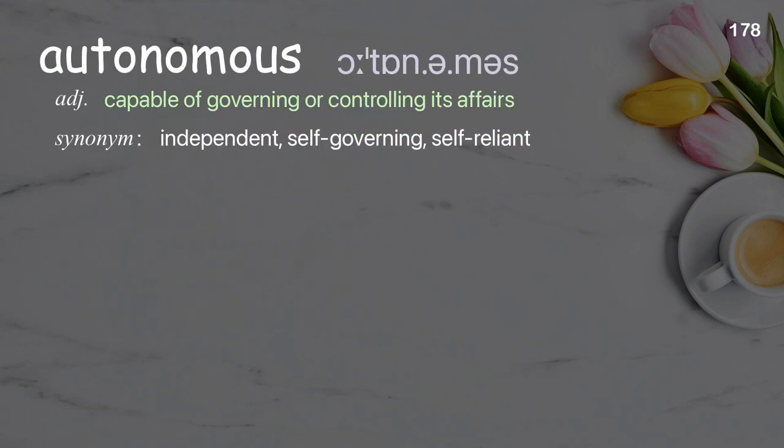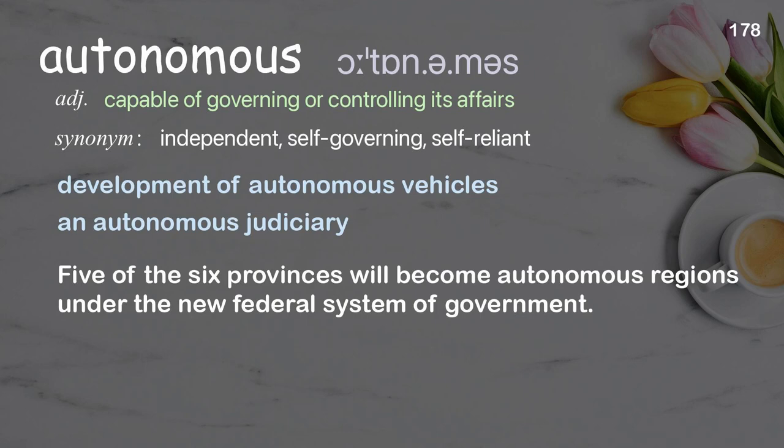Autonomous: capable of governing or controlling its affairs. Examples: development of autonomous vehicles, an autonomous judiciary. Five of the six provinces will become autonomous regions under the new federal system of government.